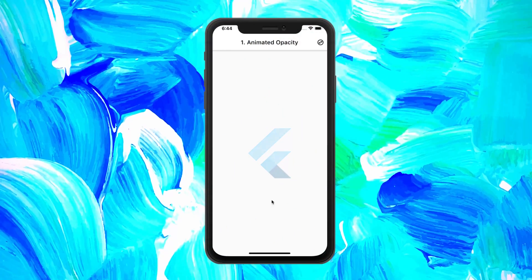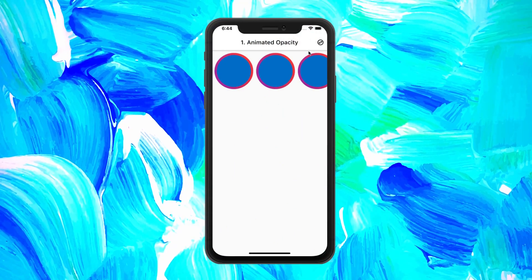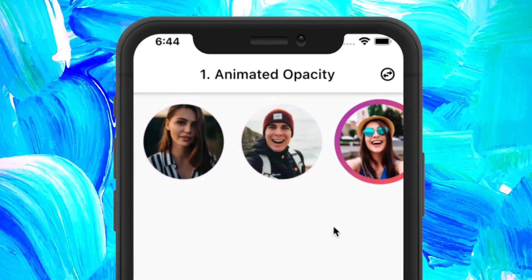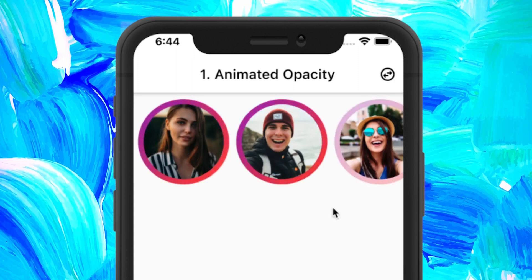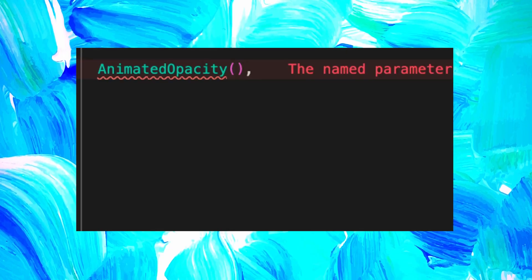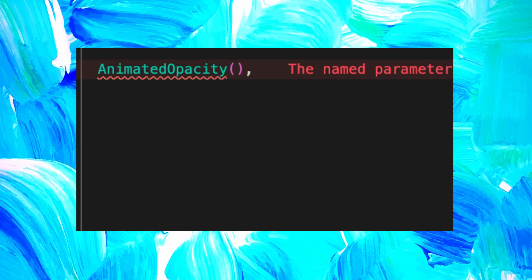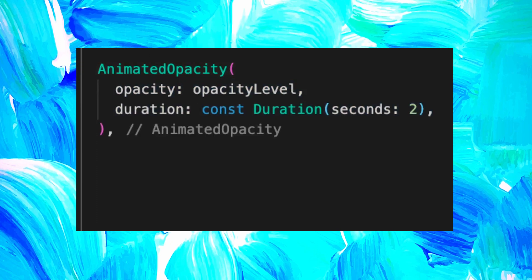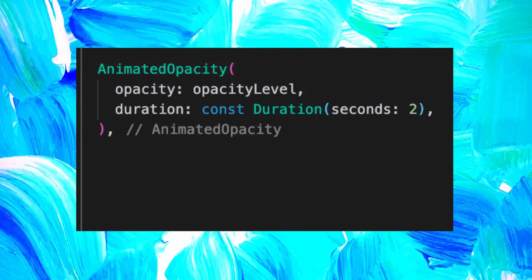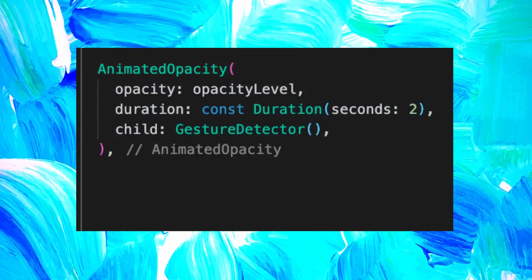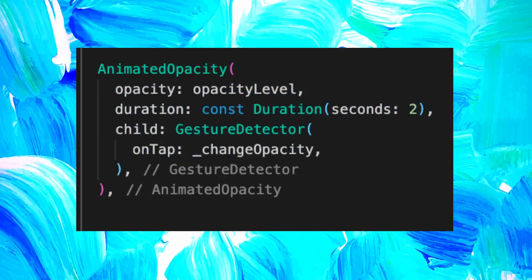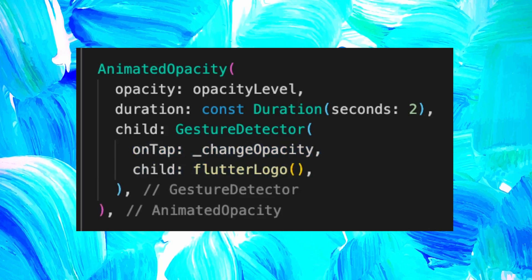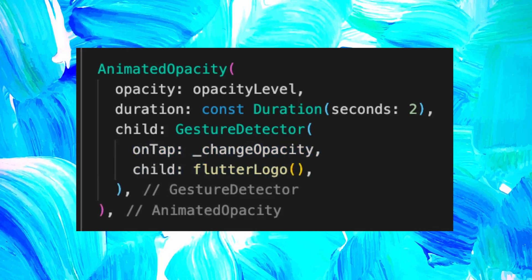This animation is the AnimatedOpacity. We can use the Instagram example once again — when we click on the profile picture, the red circle will disappear slowly. For this one, we use the AnimatedOpacity with an opacity that has a variable opacity level. The duration of this animation will be 2 seconds. Inside the child, we used the gesture detector with the onTap function that will trigger the opacity level. The child of this gesture detector is the Flutter logo.